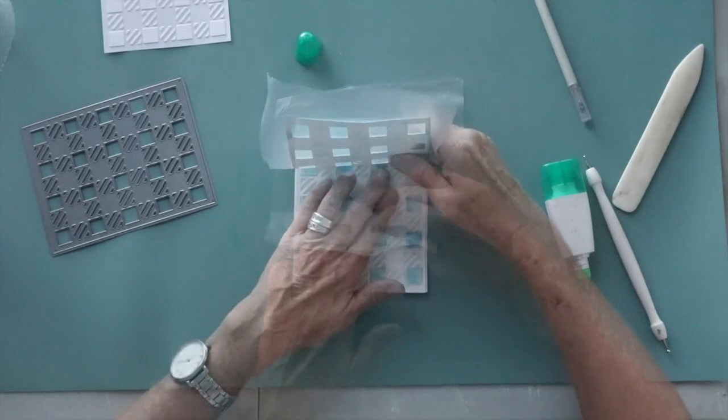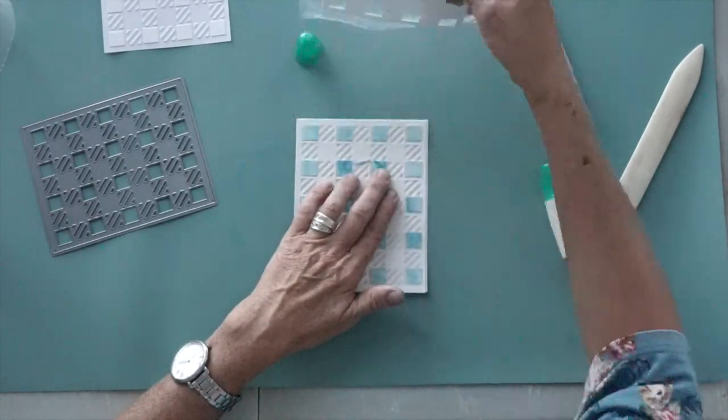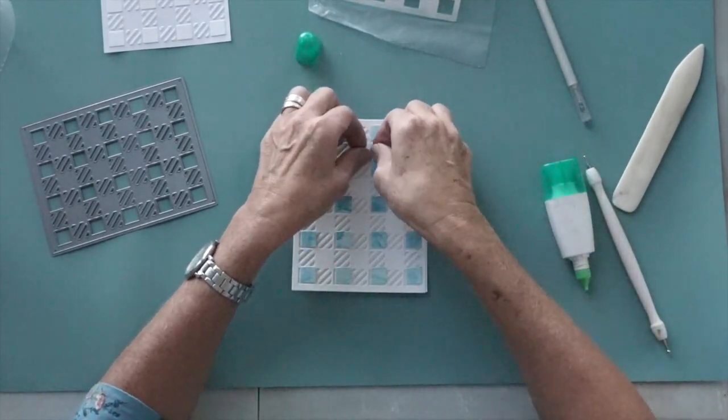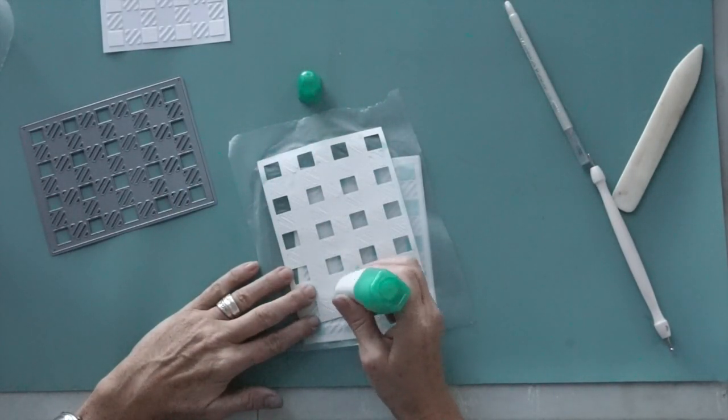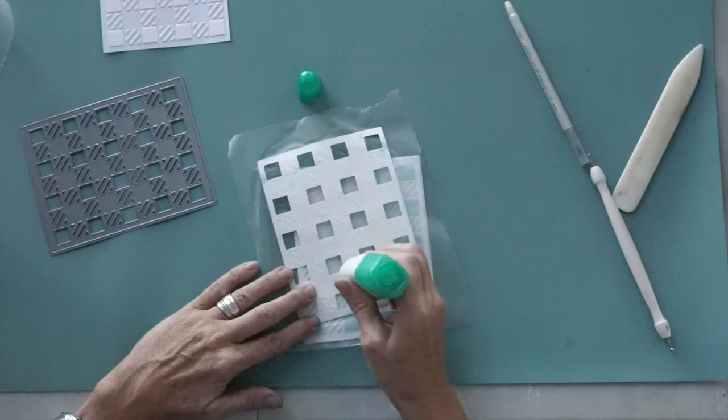I divided this process in two steps, doing first all the squares and then going back and repeating the process with all the little tiny dash lines just to keep it more manageable.